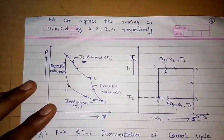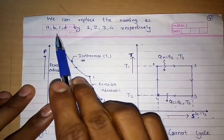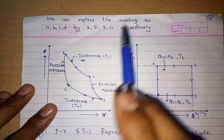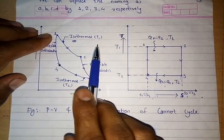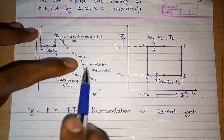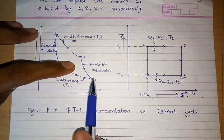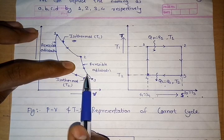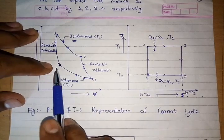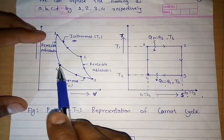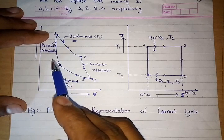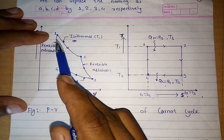Using the PV diagram, we can plot the TS diagram of the Carnot cycle. First, replace the labeling ABCD with 1, 2, 3, 4 respectively. On the PV diagram: process 1–2 is isothermal expansion at T1; process 2–3 is reversible adiabatic expansion with no change in entropy; process 3–4 is isothermal compression at constant T2 temperature; and process 4–1 is reversible adiabatic compression at constant entropy.